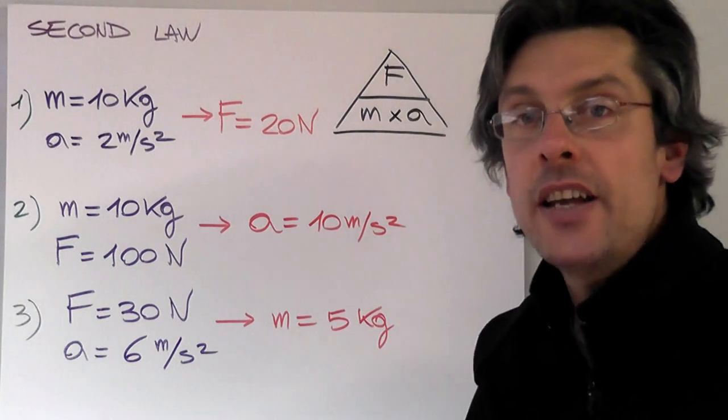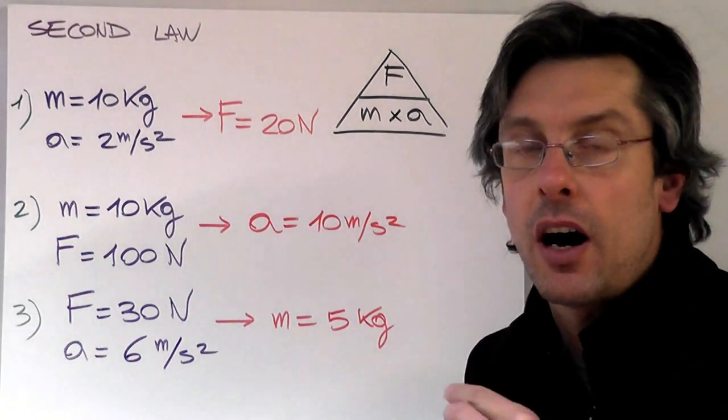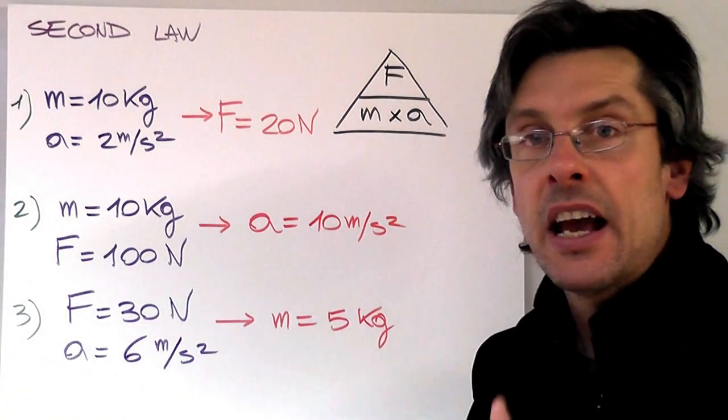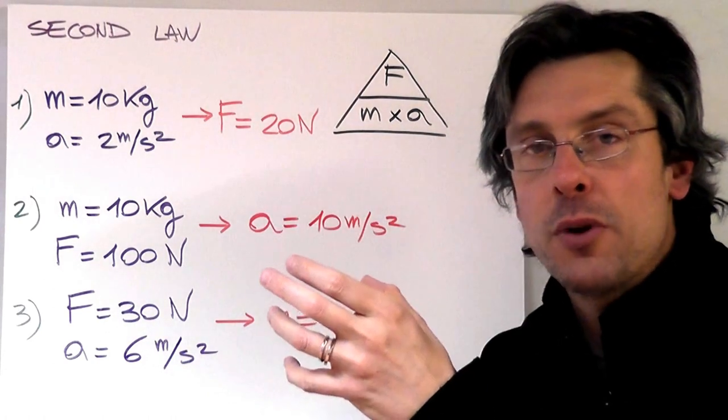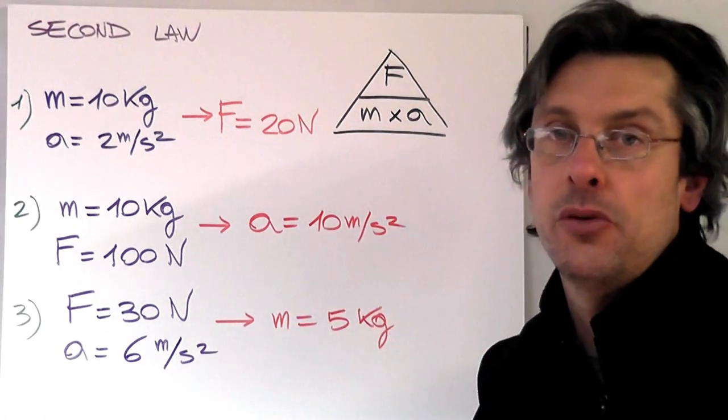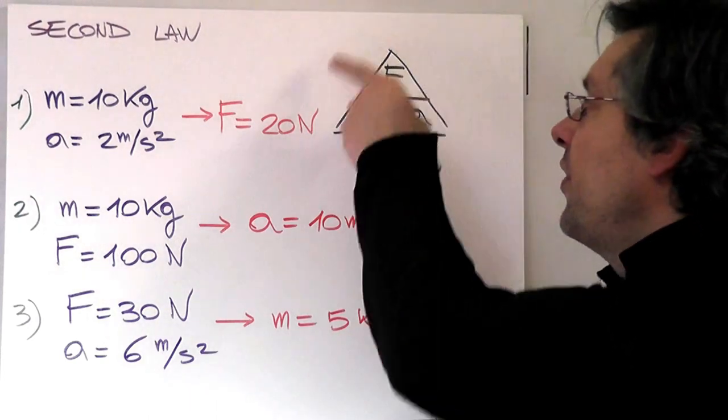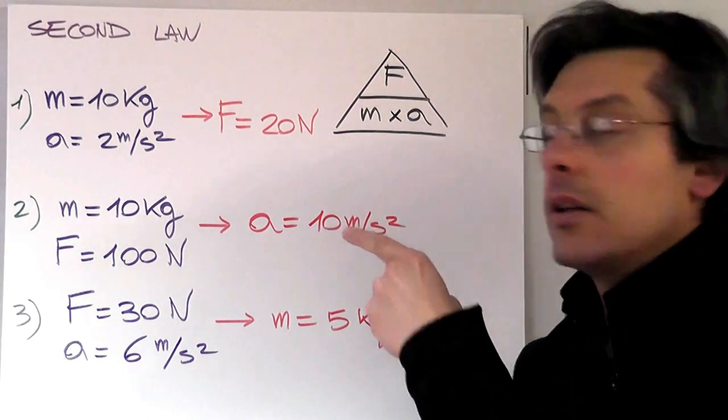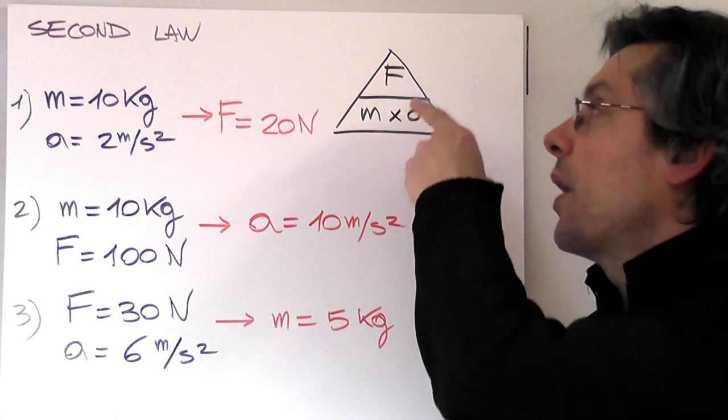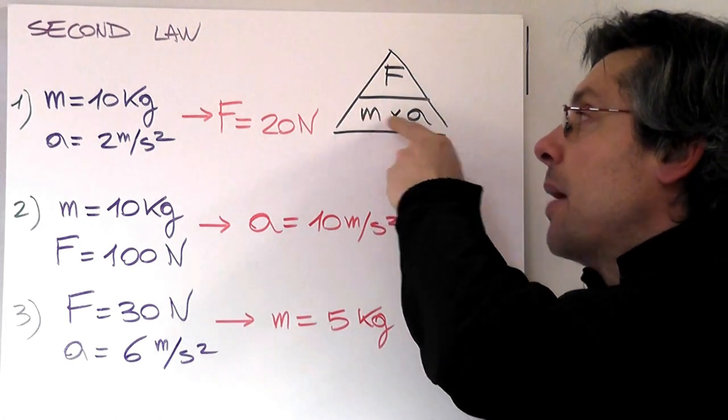Now, as for any formula we've seen so far, we would like to see how we can twist that formula around. And again, we can use a magic triangle. This time, we will have to write it this way: F, M times A.